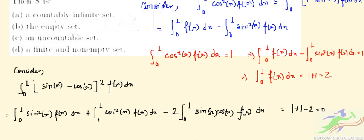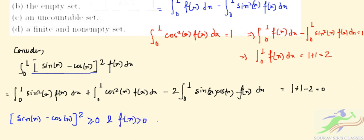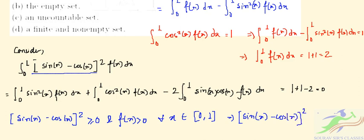We can observe that (sin(x) - cos(x))² is always greater than or equal to 0, and f(x) is greater than or equal to 0 for all x in [0,1]. Therefore (sin(x) - cos(x))² f(x) is always greater than or equal to 0 for all x in [0,1].